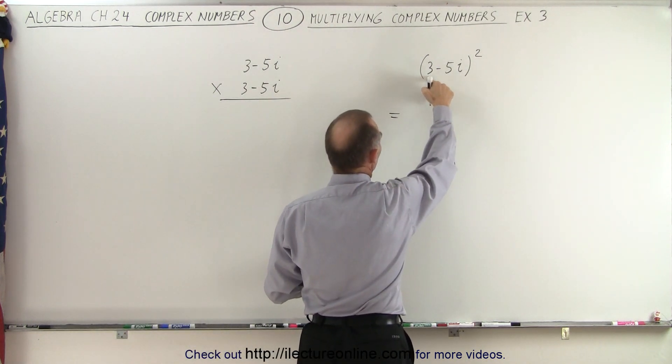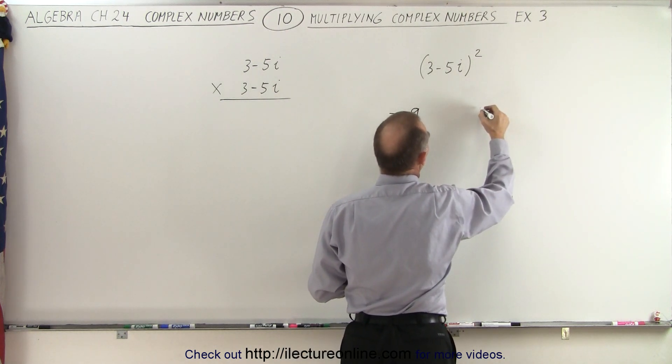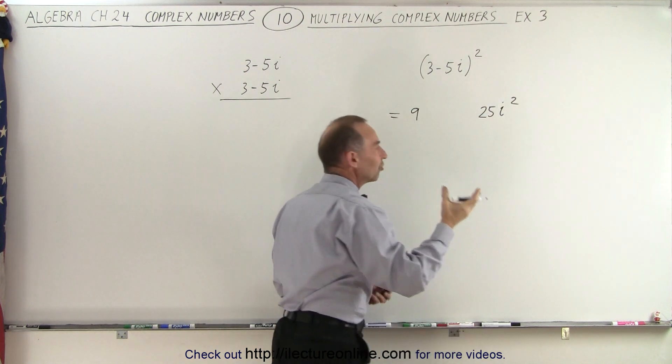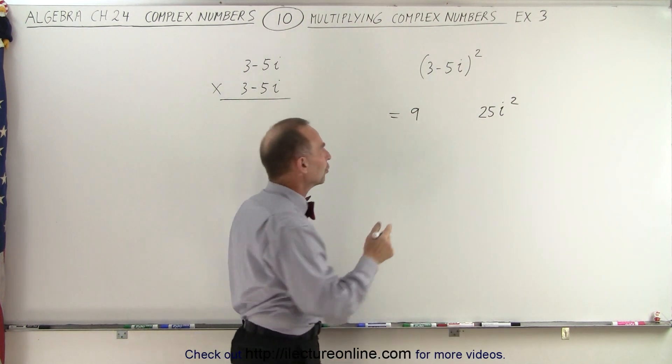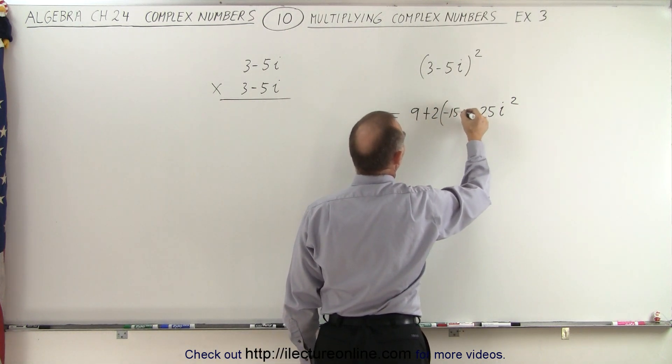So it's the first term squared, 3 times 3, which is 9, plus the last term squared. That would be 25i squared plus twice the product of the two. So plus 2 times the product of these two, which is a minus 15i.